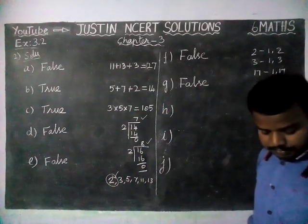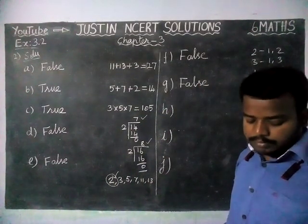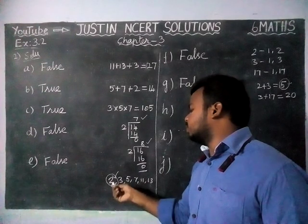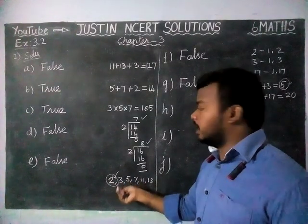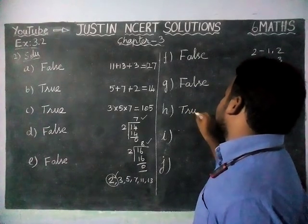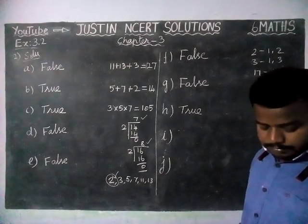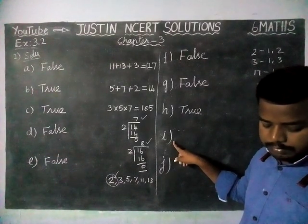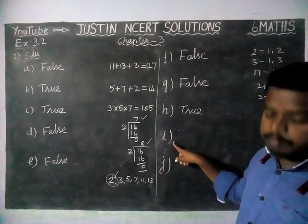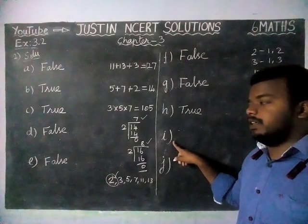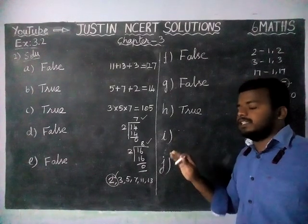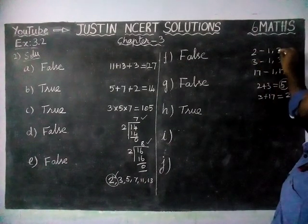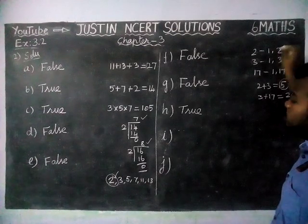Option H: 2 is the only even prime number. As we already saw in option E, except for 2, all prime numbers are odd numbers. So 2 is the only even prime number — this statement is true. Option I: all even numbers are composite numbers. A composite number has more than 2 factors. But 2 is an even number with only 2 factors, so 2 is not composite. Therefore this statement is false.